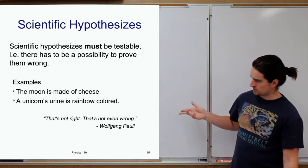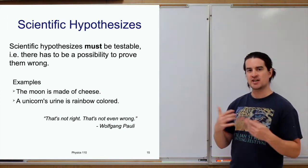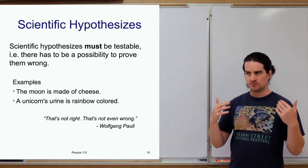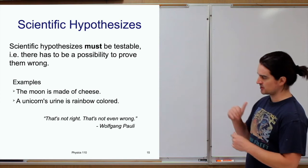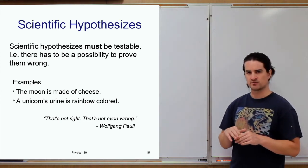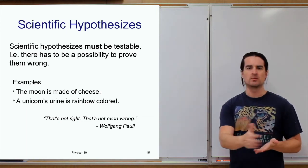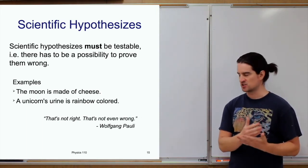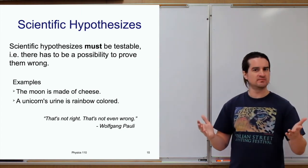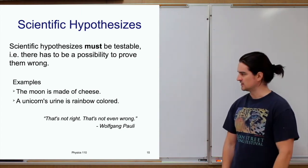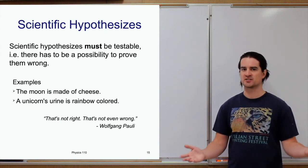And this quote sort of encapsulates that idea that a hypothesis needs to be testable and be able to be potentially proven wrong. So, this is actually from another of the founders of quantum physics, Wolfgang Pauli. This is after somebody had told him about a new idea in science or in quantum physics at the time. And his response was, that's not right. That's not even wrong. Essentially, I can't even prove that's wrong. Why would I even care? It's not a scientific hypothesis.